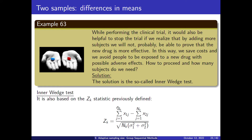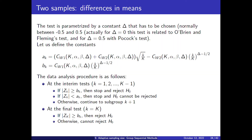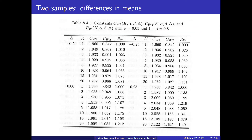How to make these decisions at the subgroups? This is called the inner wedge test. It uses the same statistic as in O'Brien and Fleming. The test is parameterized by a constant delta, chosen between minus 0.5 and 0.5. If we choose delta equals 0, it is the O'Brien and Fleming test. If delta is 0.5, it is the Pocock's test. There are a number of constants involved that depend on delta, the number of stages, confidence level, and power.